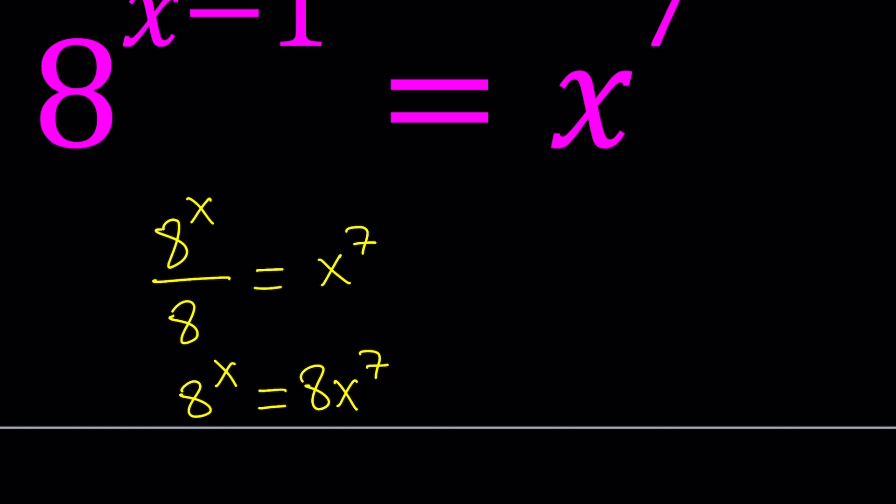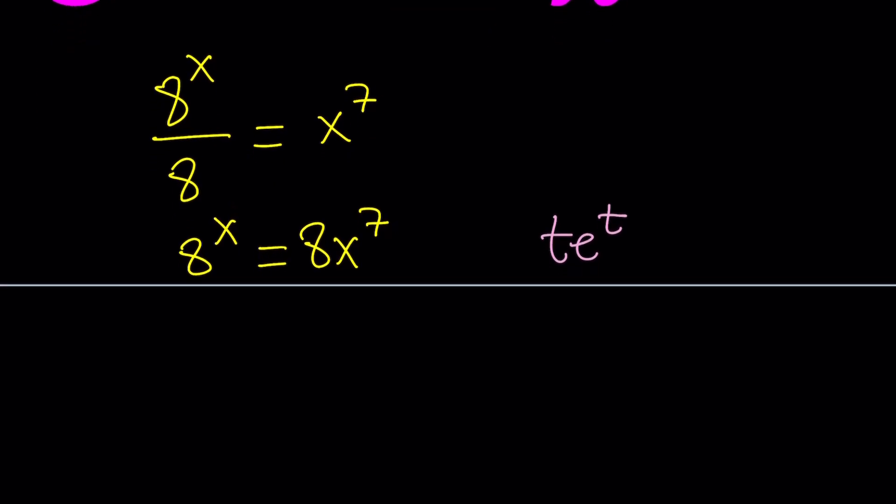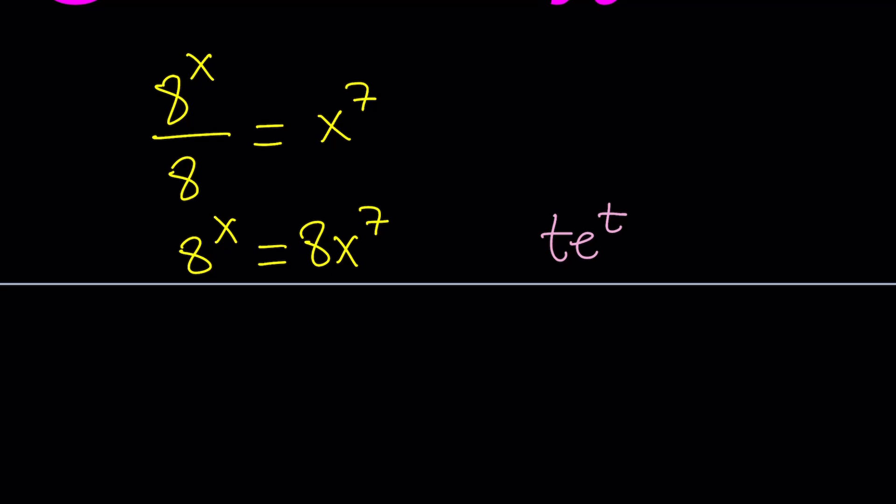So in order for our special, very special functions to work, we do need something that looks like t e to the t. We do have x to the 7th power. That's not good. We do need x to the 1st power. So let's start by taking the 7th root of both sides.